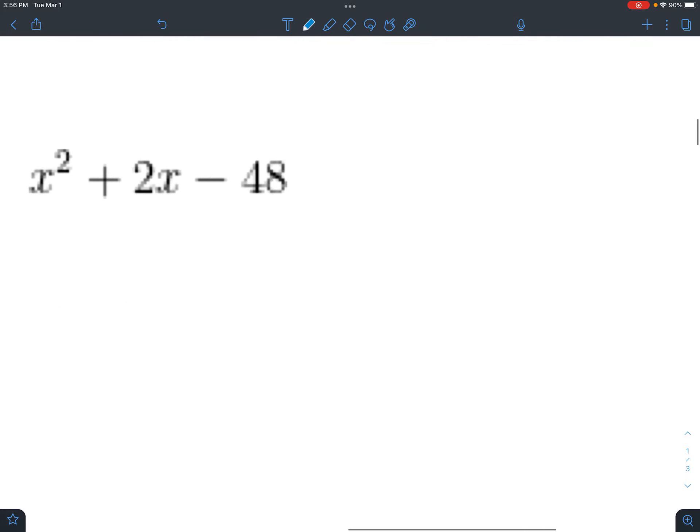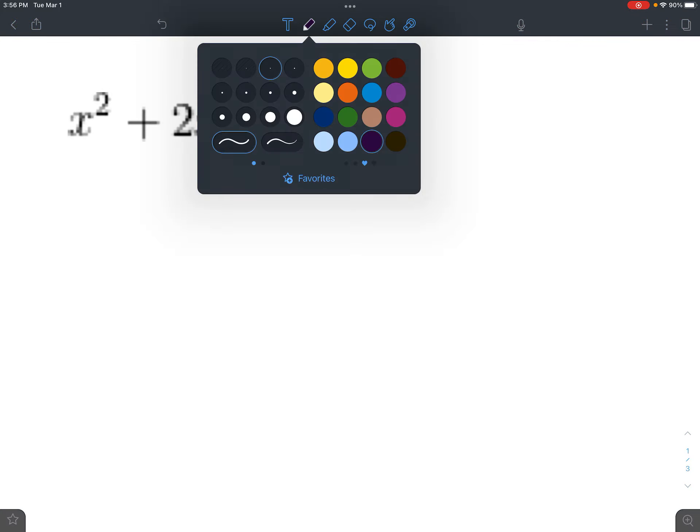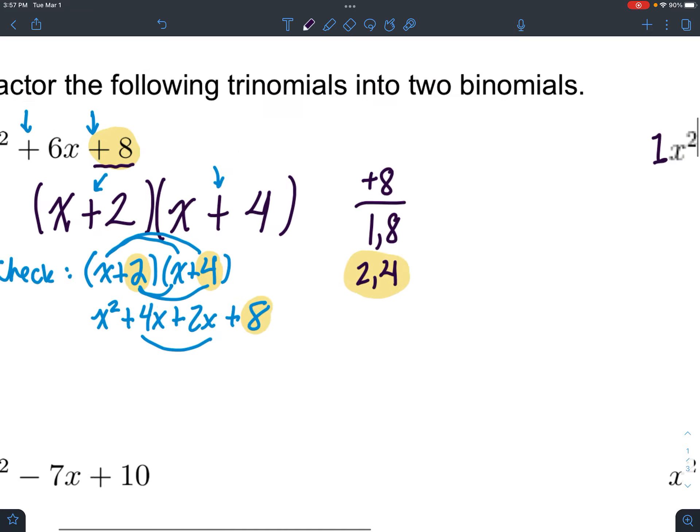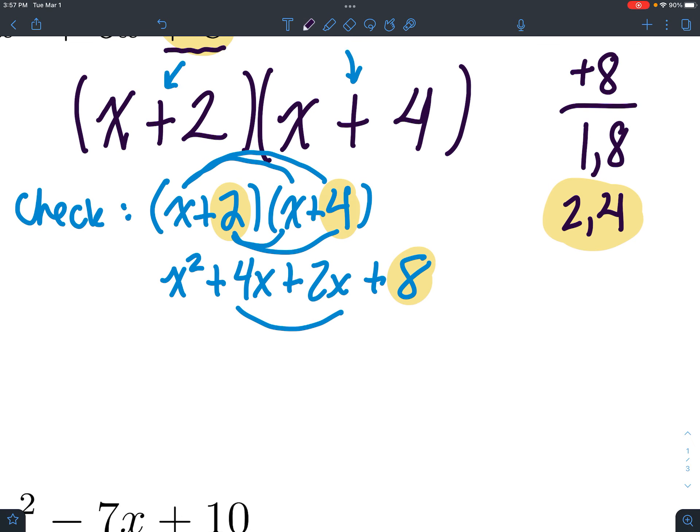So this one. You always can set it up like this. When this is a one, you see how there's no number out front. You can always do this. And then you have to figure out what signs plus or minus and what numbers go here. So there's kind of like four blanks. And you can figure out what the signs are by just looking at these signs. So a negative sign actually determines it for you. The only way that's going to work is with a plus and a minus.